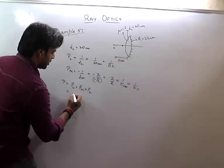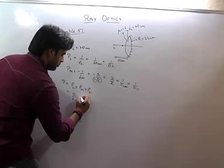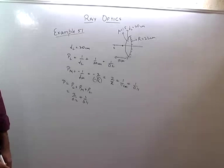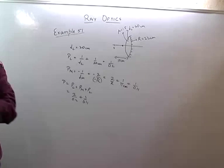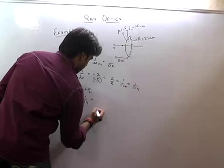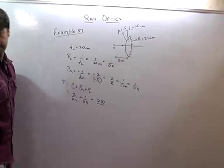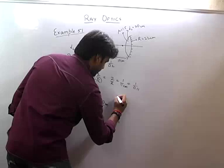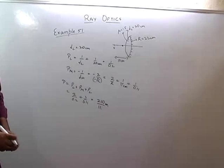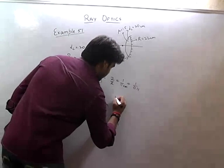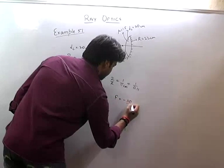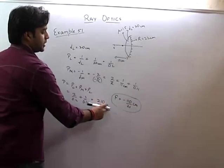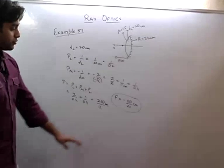The total power works out to 210/11 diopters. The equivalent focal length is f = -1/P_net, which comes out to -110/21 cm. Since the system behaves as a concave mirror, we will use the mirror formula.